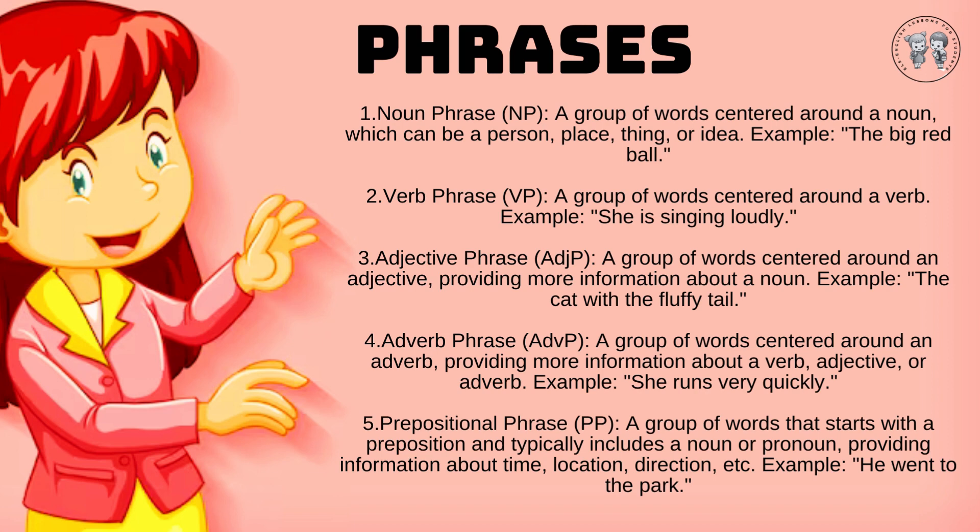5. Prepositional phrase (PP): A group of words that starts with a preposition and typically includes a noun or pronoun, providing information about time, location, direction, etc. Example: He went to the park.